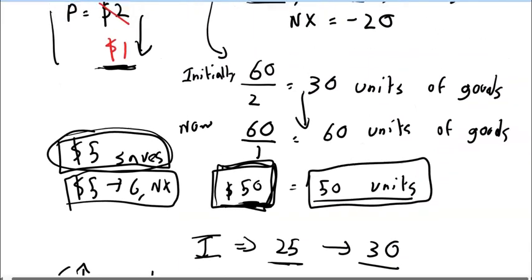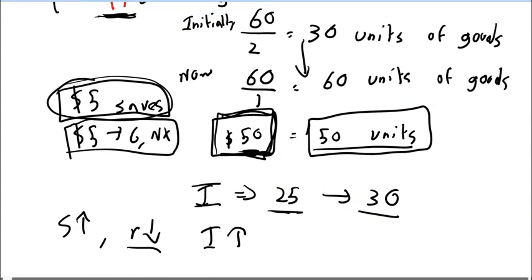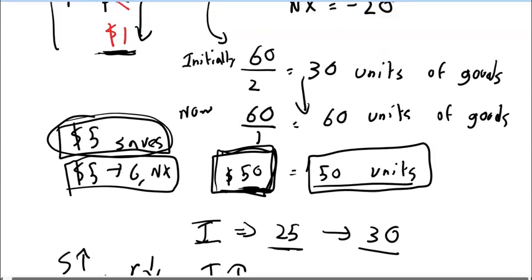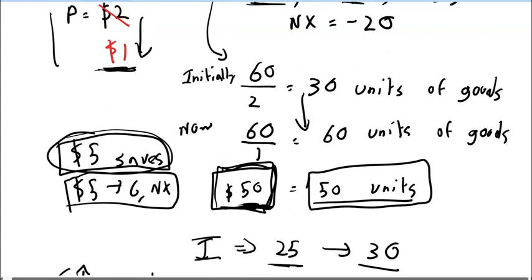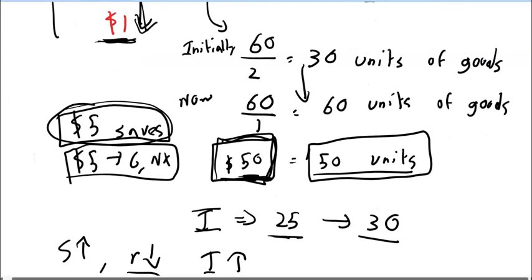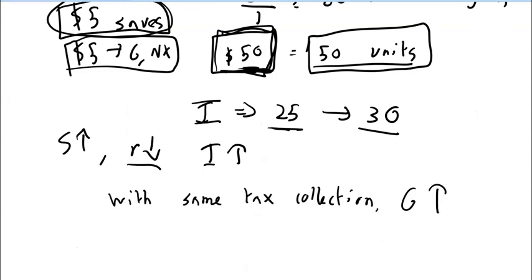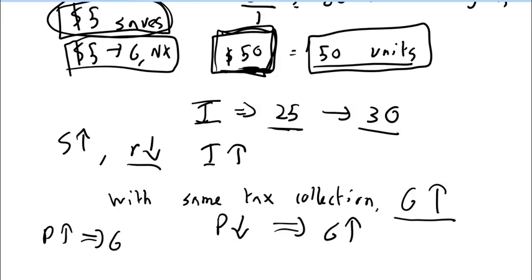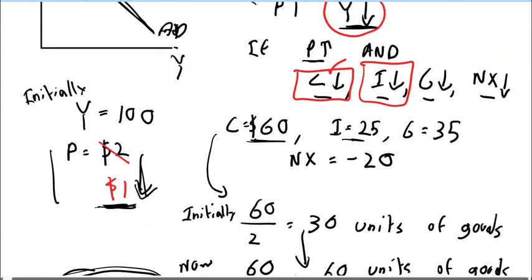What about government spending? Some books hold it constant, but if price decreases, goods are cheaper. So with the same tax collection, the level of real government expenditure can increase. As price decreases, it implies that government expenditure can go up. Or if price increases, we see that government expenditure goes down. So this relationship is also fulfilled.